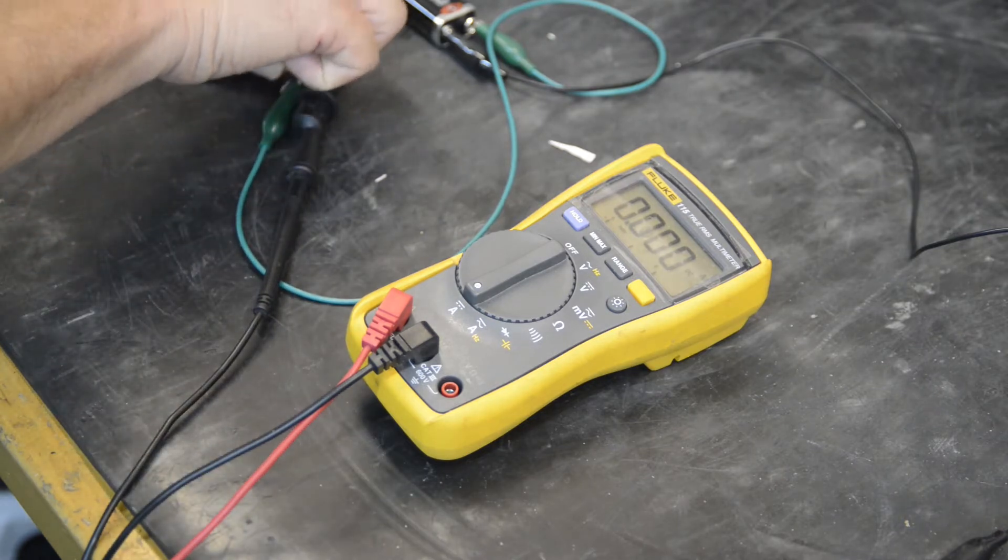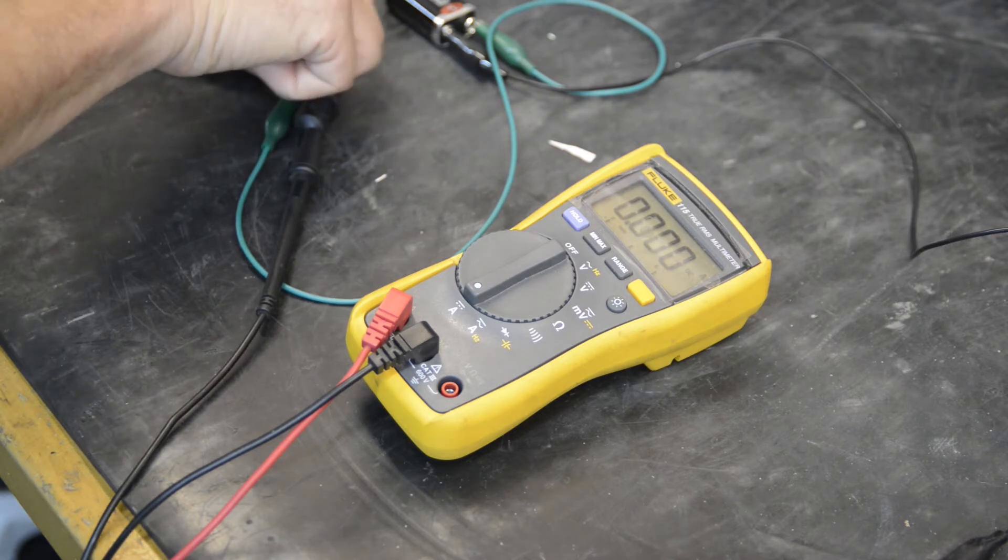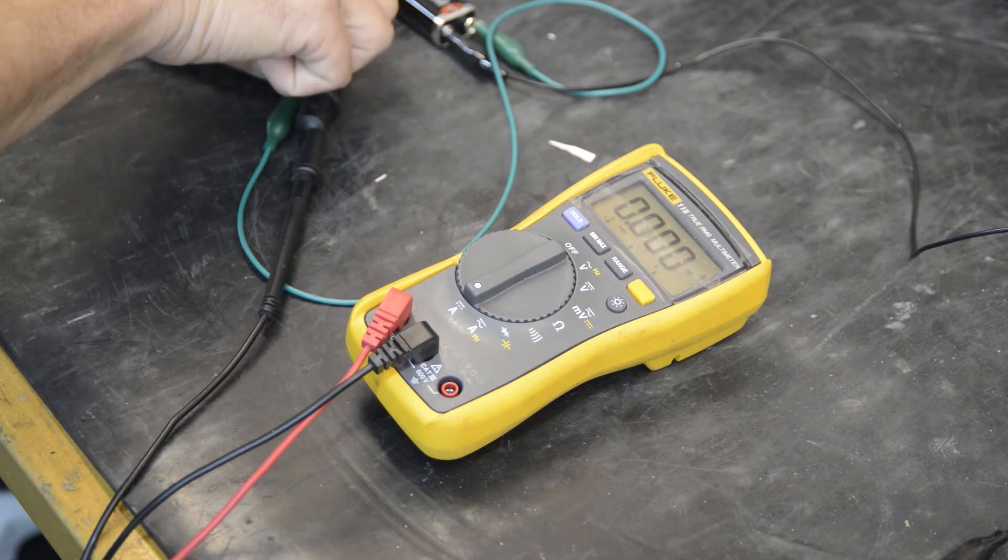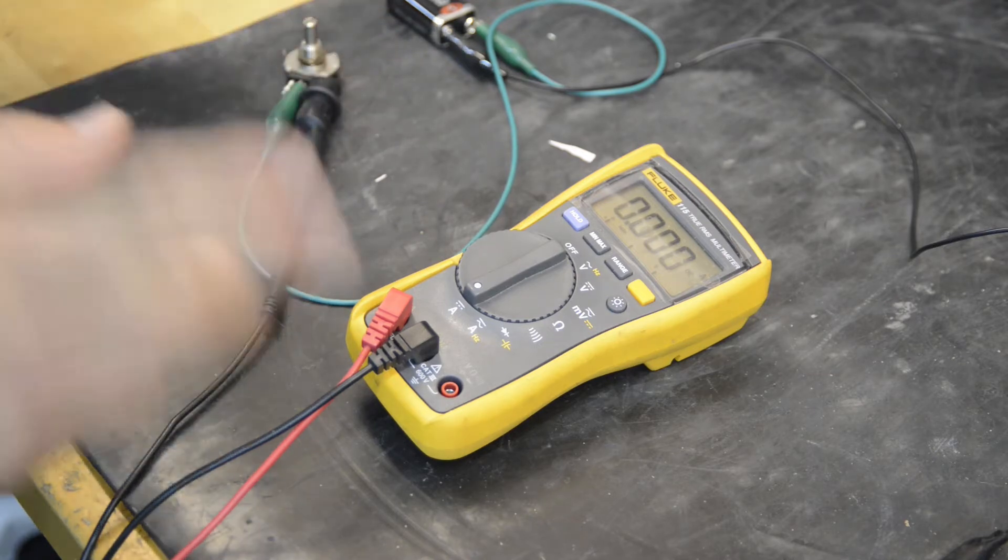But when I adjust the variable resistor, I have nothing, and that's what I had in the field was nothing, so this is simulating what I was seeing in the field.